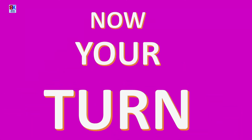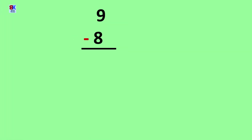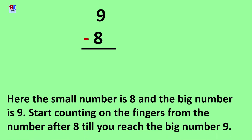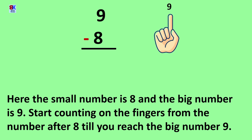Now your turn: 9 minus 8. Pause the video and solve the sum. Check whether you are able to get it correct. Here the small number is 8 and the big number is 9. Start counting on the fingers from the number after 8, till you reach the big number 9. We required only one finger to reach 9.